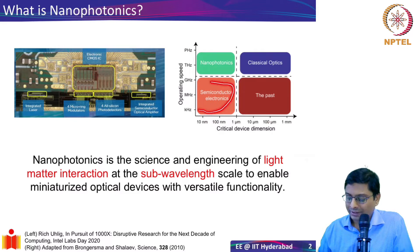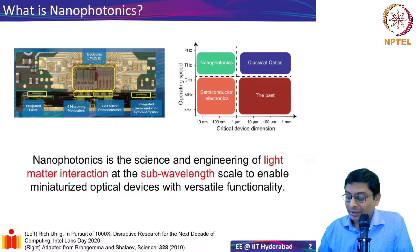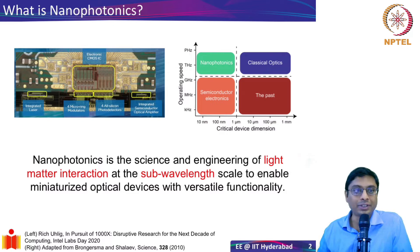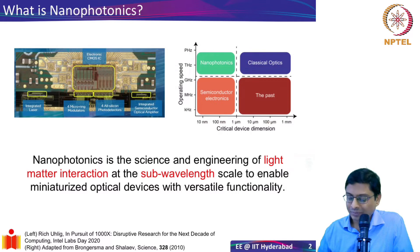Electronics operates in this region of the graph, whereas optics involves much larger devices — for example, an optical fiber has a core diameter of about 10 microns. But optical operating speeds are much higher because we are dealing with the frequency of light, which is in the range of hundreds of terahertz. So it is natural to want the best of both worlds: the small dimensions of electronics and the fast operating speeds of photonics. That quest is what leads us to nanophotonics.